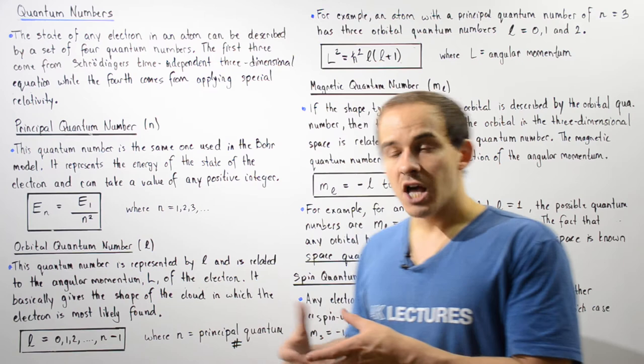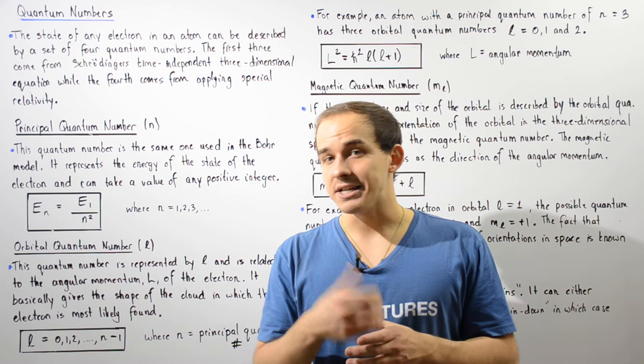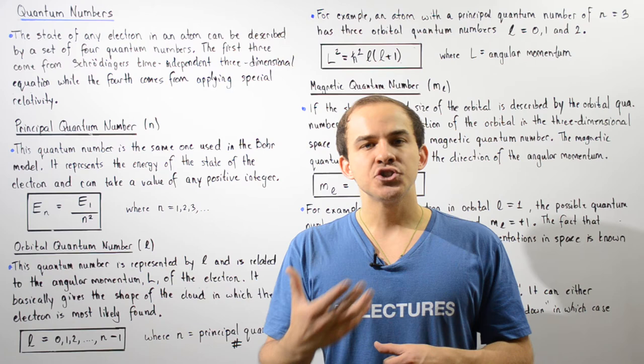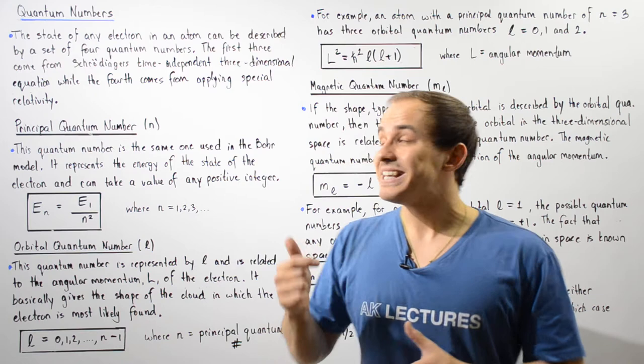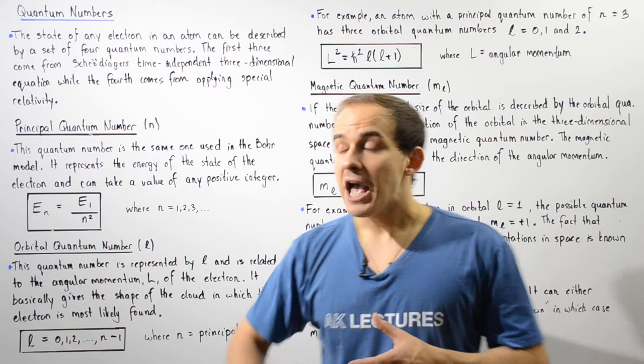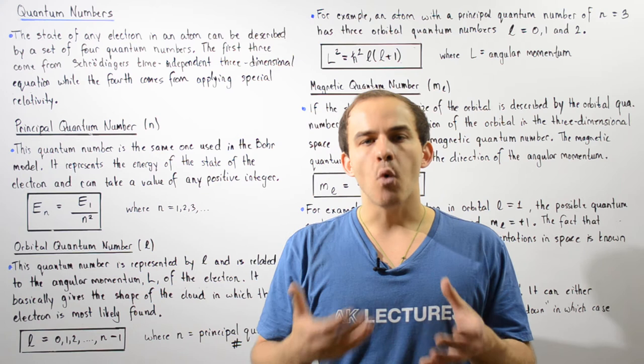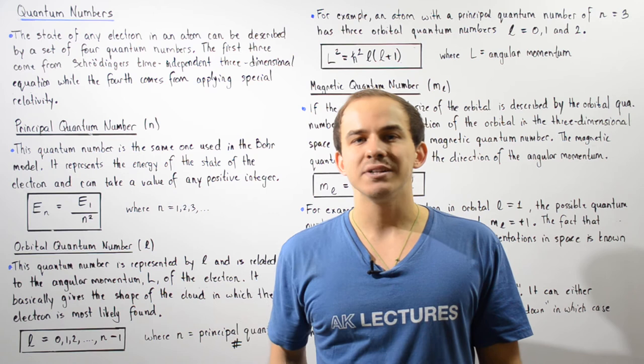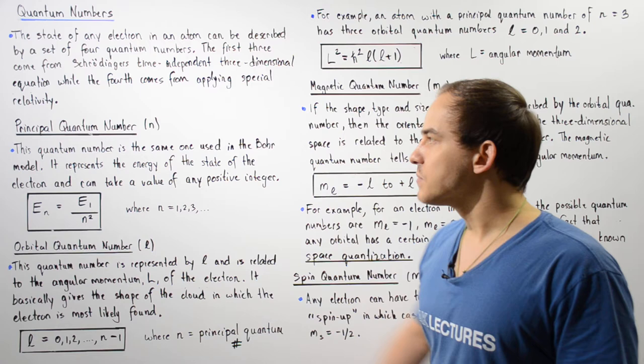We're not going to go into the detail of the solving process to obtain these four quantum numbers. Instead, we're going to focus on what each one of these quantum numbers actually represents. Let's begin with the principal quantum number, given by lowercase n. This is the first quantum number and the same quantum number used when we discussed the Bohr model of the hydrogen atom. The principal quantum number designates the energy of our electron within our atom.